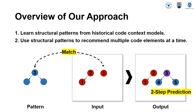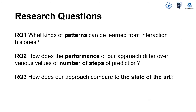Note that our approach gives two-step prediction in this specific example. We explore three research questions to investigate the effectiveness of our approach for code context model prediction. The first considers the kinds of patterns that can be learned from interaction histories. The second considers the performance of our approach and how it differs across various numbers of prediction steps. The third asks how our approach compares to the state of the art represented by the Suede algorithm.